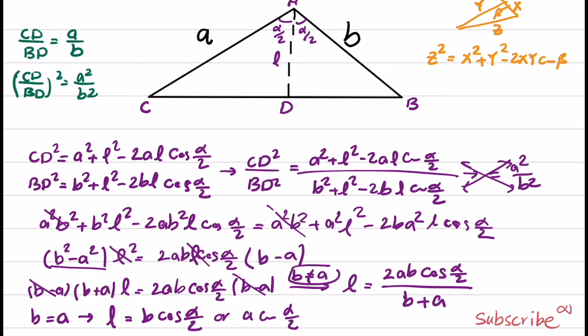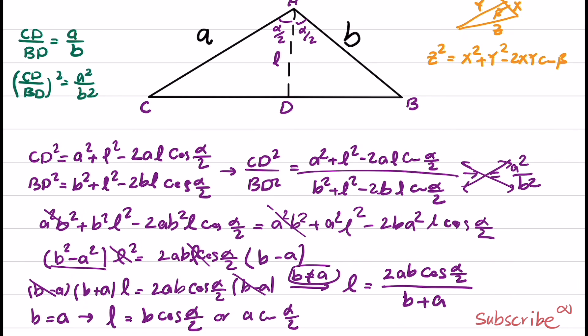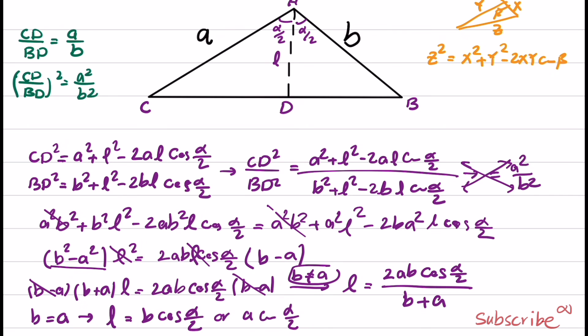So the general form is L equals 2AB·cosine(alpha/2) over (A plus B), and if A equals B, either of those two expressions gives the length of the angle bisector. If you like this video, please press the like button and don't forget to subscribe to my channel for more videos like this. Thank you.